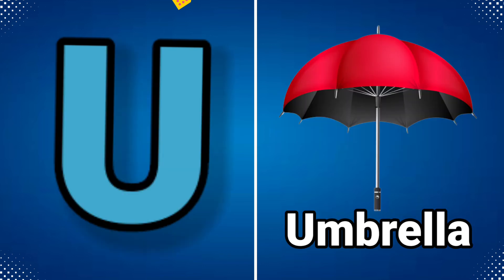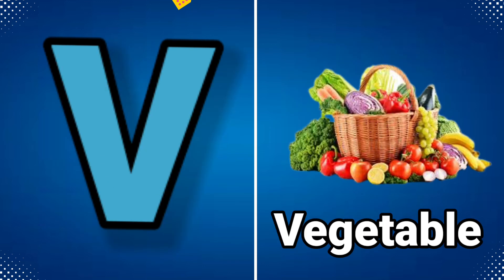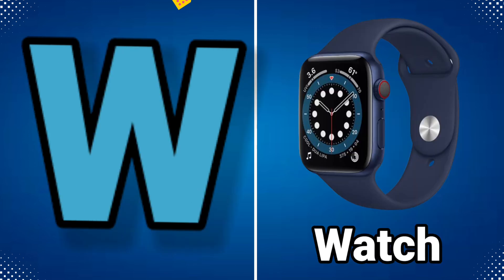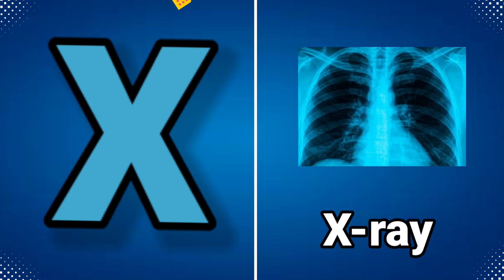U for umbrella, V for vegetable, W for watch, X for x-ray.